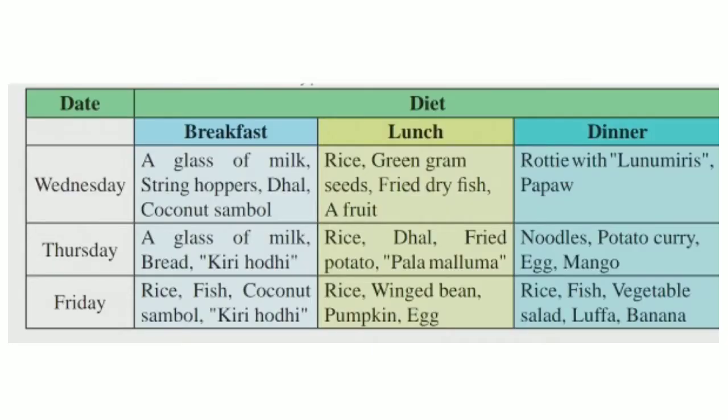Look at the lunch column: rice, green gram seeds, fried dry fish, a fruit. Then another day, rice, dal, fried potato and palamello — that means leaves. For dinner: roti with lunamini and papo; noodles, potato curry, egg with mango; rice, fish, vegetable salad, rufa and banana.